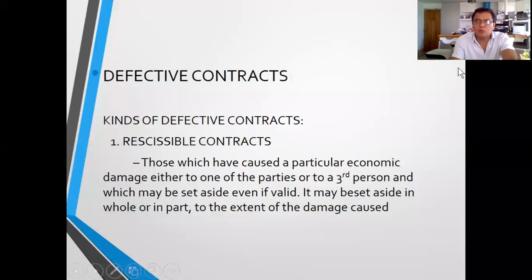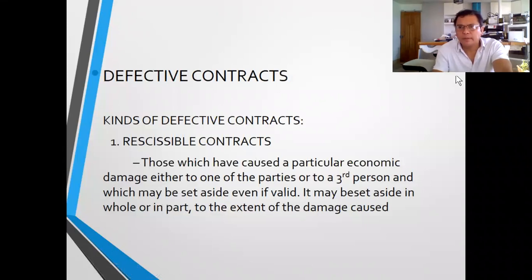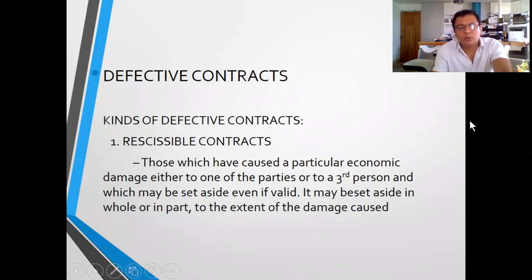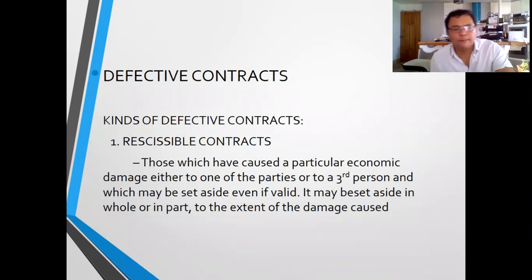Now we will discuss defective contracts. This is the last part of contracts. There are four defective contracts: rescissible, voidable, unenforceable, and void contracts.